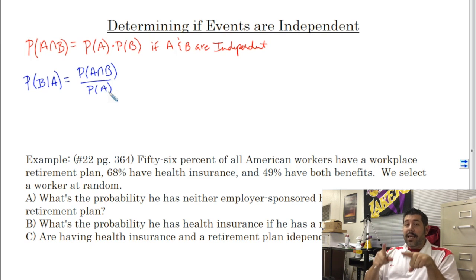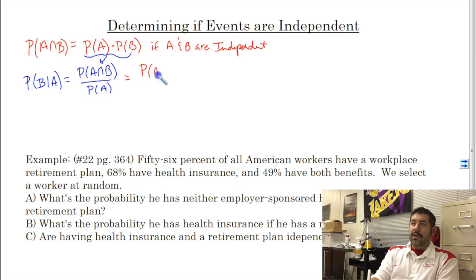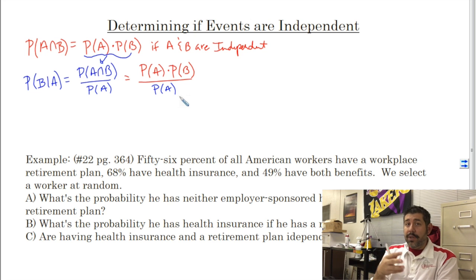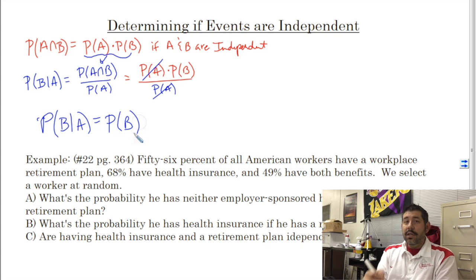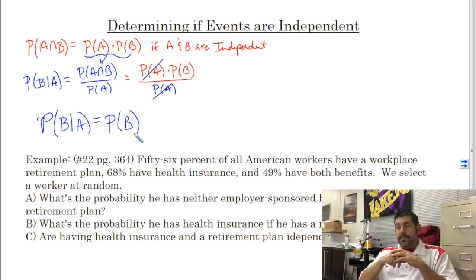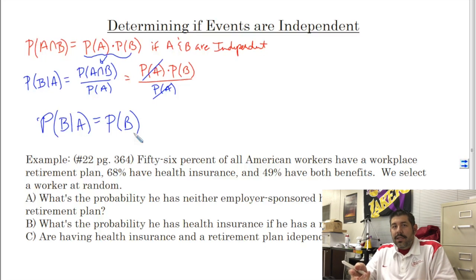Assuming that A and B are independent, I'm going to make a little substitution. I'm going to substitute the multiplication rule in here, so that gives me P of A times probability of B divided by the probability of A. Notice here that the probabilities of A simplify out, so the probability of B given A equals the probability of B if A and B are independent.